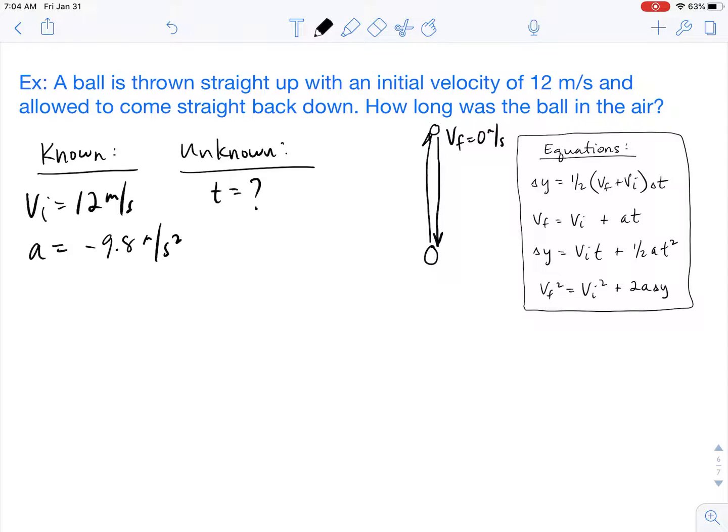And so one method is setting VF at the top here at zero meters per second because the ball has to stop before it can come back down. And so when you solve for the time in that method, once you get the time, you have to end up doubling the time because the concept, the amount of time it takes to go up is the same amount of time it takes to come back down. So let's go ahead and solve for that method.